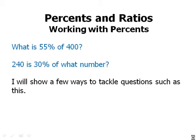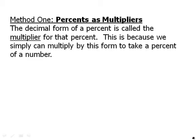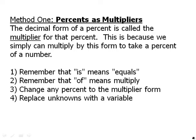The first really big idea is percents as multipliers. The decimal form of a percent is called the multiplier for that percent. This is because we can simply multiply by this form to take a percent of the number. So when we're using percents as multipliers, here are the basic things to remember. Remember that is means equal, of means multiply. Change any percent to the multiplier form and replace unknowns with a variable.